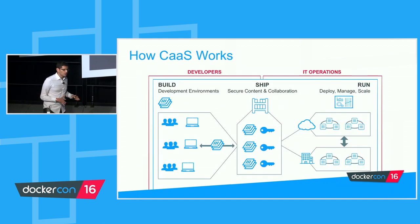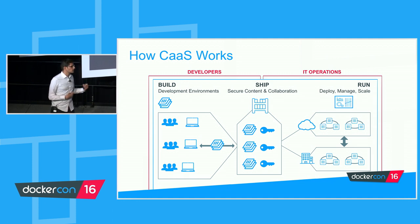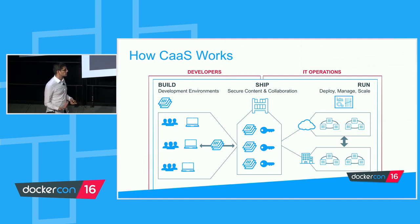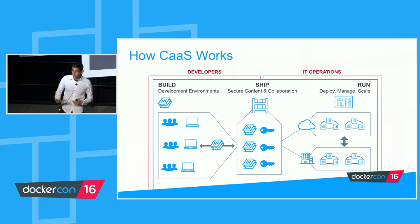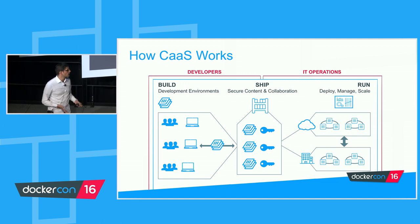We try to break this up into a build, ship, and run interface — and it actually starts with ship. Ship is where IT operations and developers collaborate. IT operations creates a series of trusted base images. Developers bring those images to their laptops or workstations, build their applications on top of those, and push them back to the ship repository. Then IT operations takes those applications and runs them in their production or test environments, whether in the cloud or on-prem.